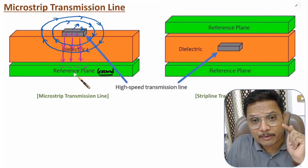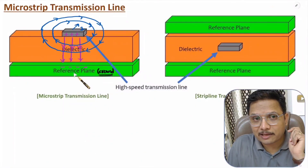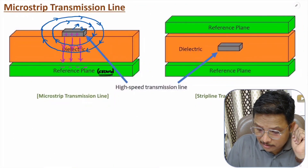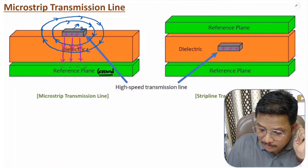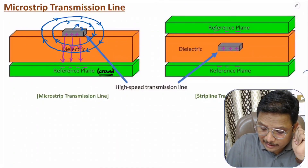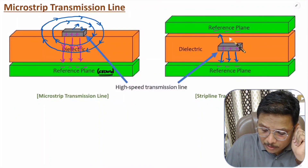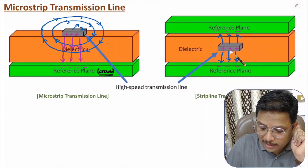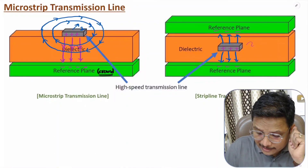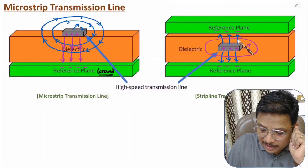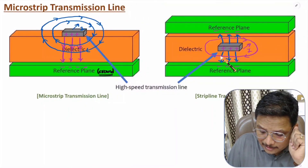For the stripline transmission line, if the strip line is positive then both grounds above and below are negative. Electric field emerges from the strip line and goes towards the ground on both sides. Magnetic field revolves with respect to the direction of current as per the right-hand thumb rule.